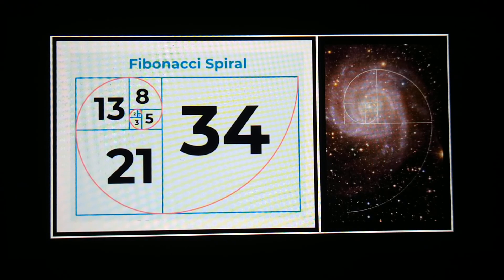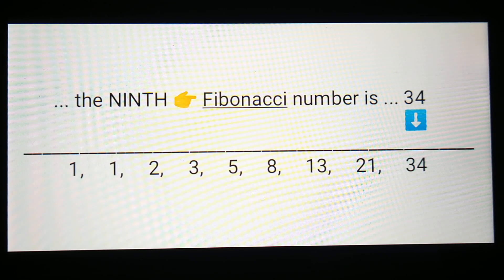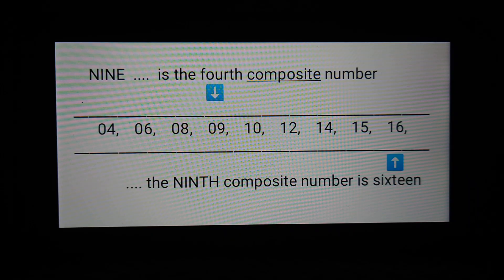Pick any line, any row, any column, either one of the diagonals — and there are so many more ways to get that number 34. Just to repeat: 34 is the ninth Fibonacci number, the ninth composite number is 16 — which is four squared, or four times itself — and nine is the fourth composite number.